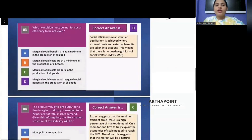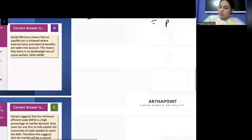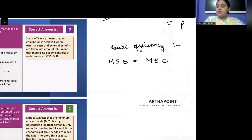Read the next question. What condition must be met for social efficiency to be achieved? So social efficiency, economic efficiency when does it come? When marginal social benefit is equal to marginal social cost.